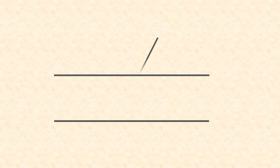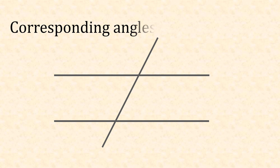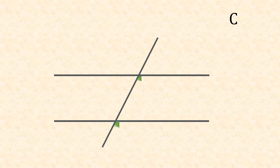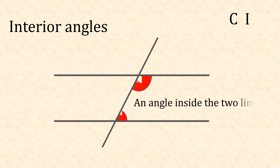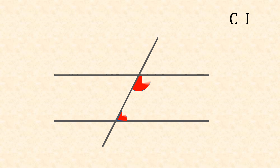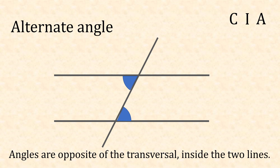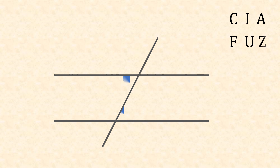We'll draw our parallel lines and put on our transversal. The first angle we're going to look at is corresponding — this is when the two angles are in matching corners. Next is interior, when all the angles are inside the two lines. And alternate, when the angles are opposite the transversal but inside the two lines. Now we're going to make it easier to remember.